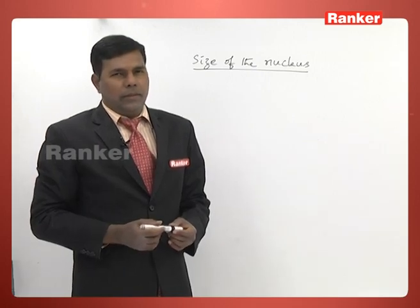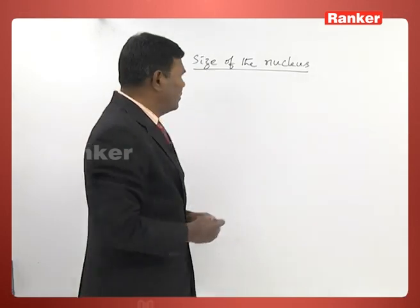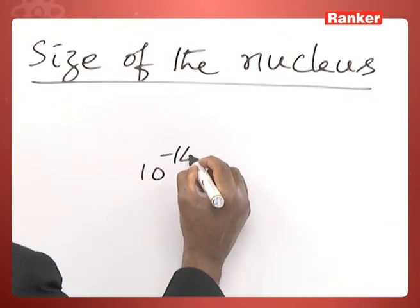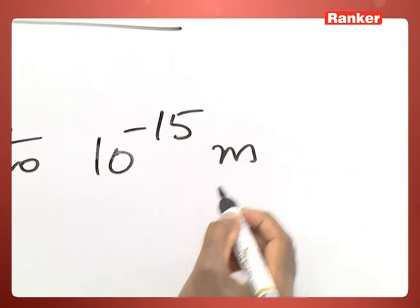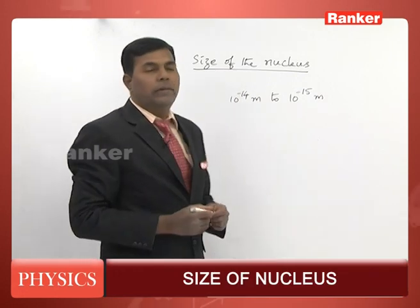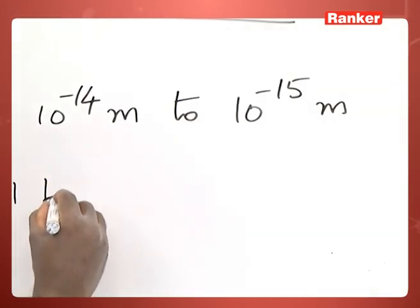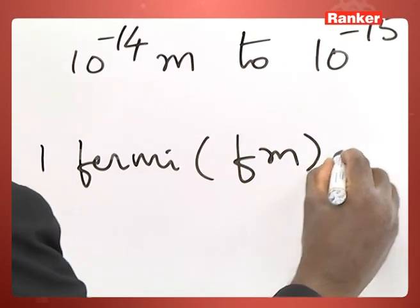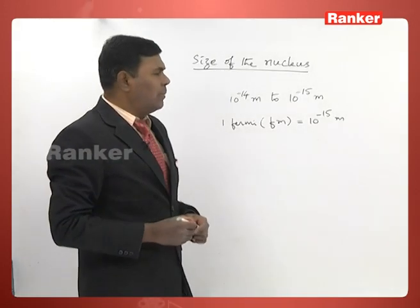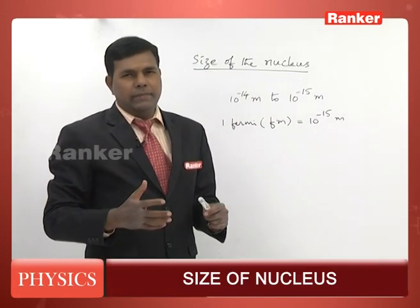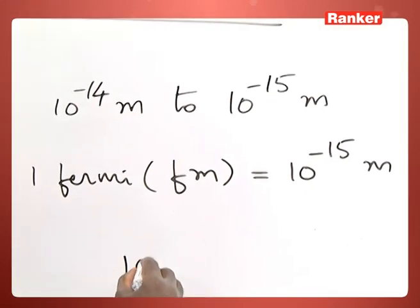The size of the nucleus is of the order of 10 to the power minus 14 meters to 10 to the power minus 15 meters. This is the nuclear size, and it is generally measured in units of Fermi. One Fermi is equal to 10 to the power minus 15 meters. When compared to the size of the atom, the size of the nucleus is very, very small. The size of the atom is of the order of 10 to the power minus 10 meters.